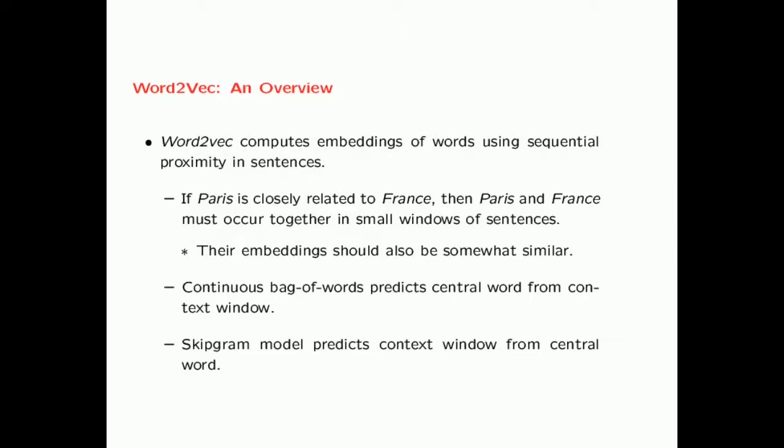There are several variations of the Word2Vec model. One variation is the continuous bag of words which uses a context window and predicts the central word from the words available in the context window. The second popular model is the skip-gram model which predicts the words in the context window from the central word. Now in the book, I have discussed both models. However, in this video, I will discuss only the skip-gram model because of its greater popularity.